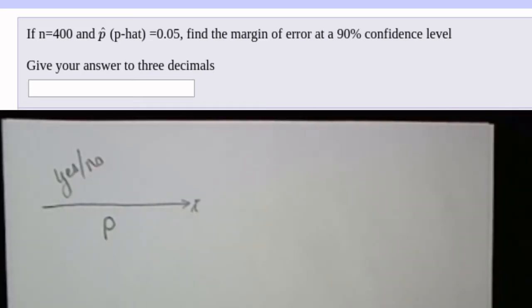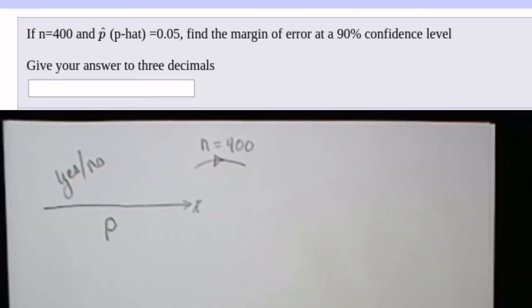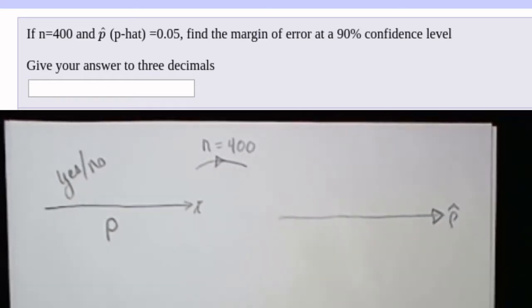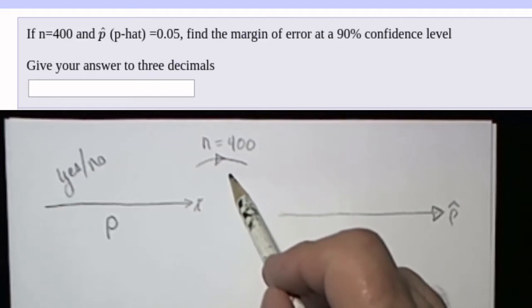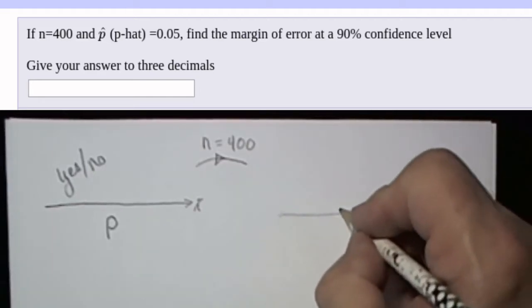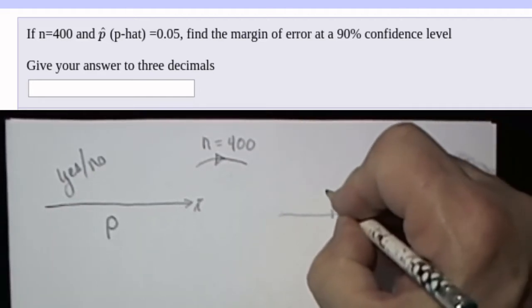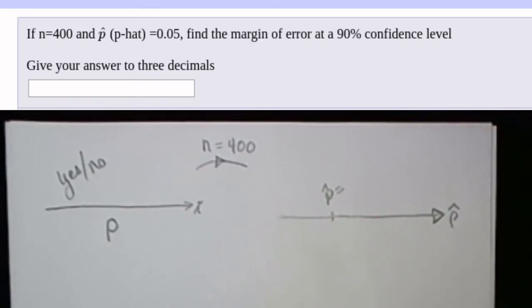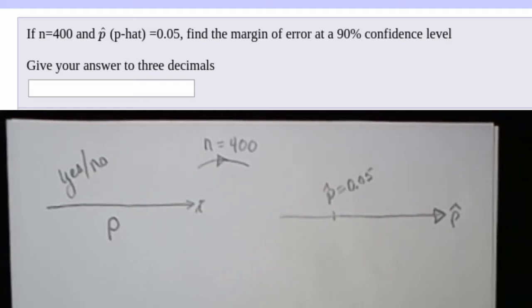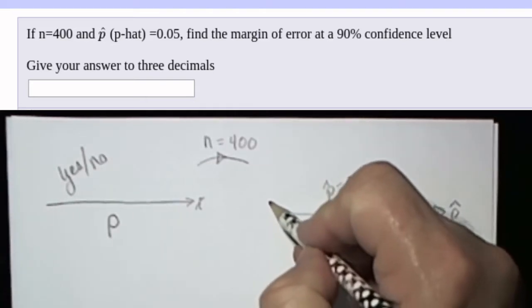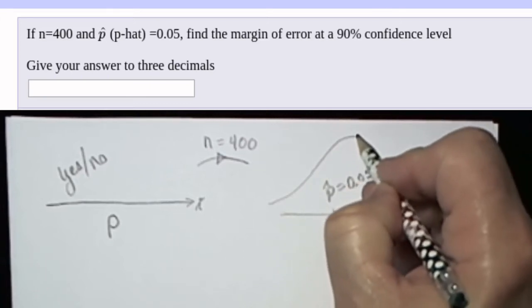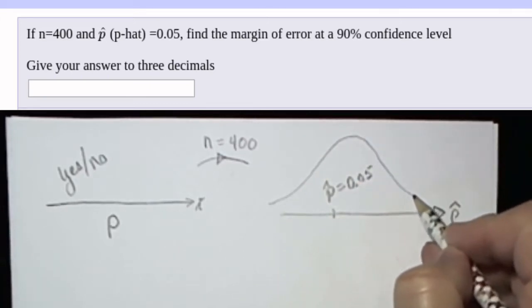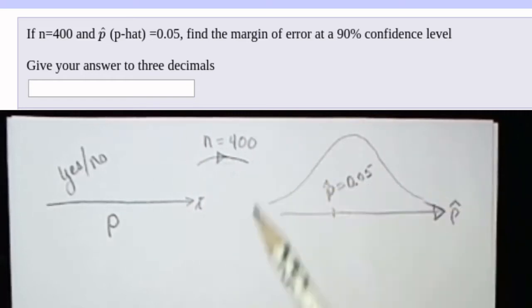The next thing that we need to do is develop the three-distribution diagram. The problem says that we're looking at a sample of 400 individuals. Interestingly enough, this problem does not tell us what the number of successes are, but they did calculate the p-hat for that sample and it ended up being 5%. The second distribution in the three-distribution diagram looks at the distribution of all the sample proportions that are possible with samples of 400.